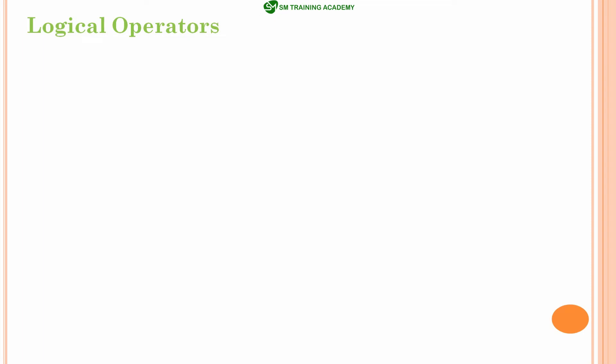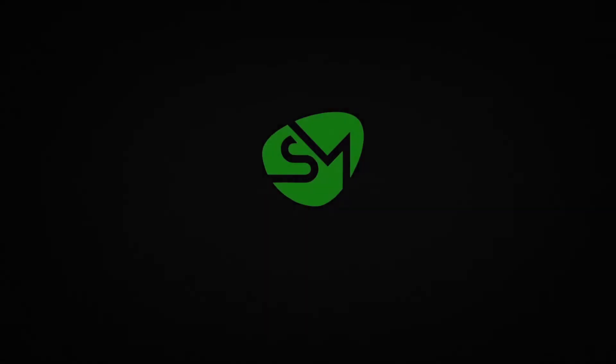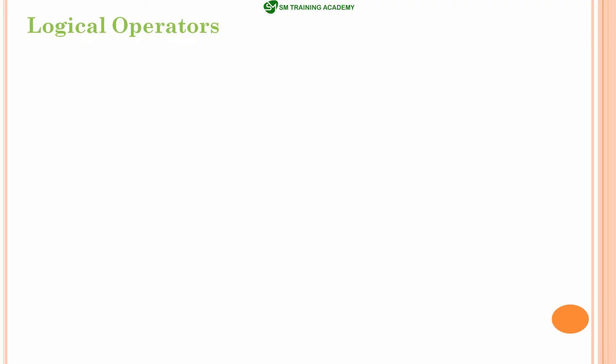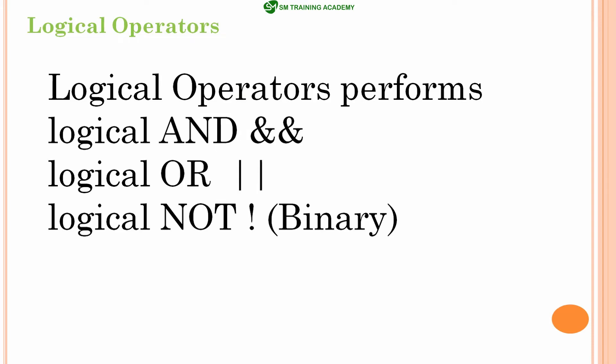Hello everyone. In this video we are going to study in detail about logical operators in C language. Let's get started. These logical operators in C language are binary type operators which require at least two operands for proper operation. The most widely used logical operations in C language are logical AND, logical OR, and logical NOT. Let's study each of these three logical operators in detail.